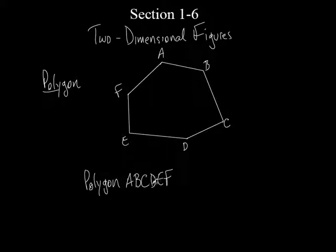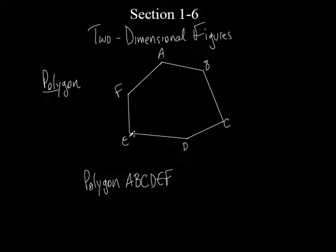So I could call it polygon A, B, C, D, E, F. I could have called it polygon A, F, E, D, C, B. Or I could have started at D and called it polygon D, C, B, A, F, E. You get the idea — there are all kinds of different ways. That's just a little bit nicer in alphabetical order, but that's what that polygon would be.